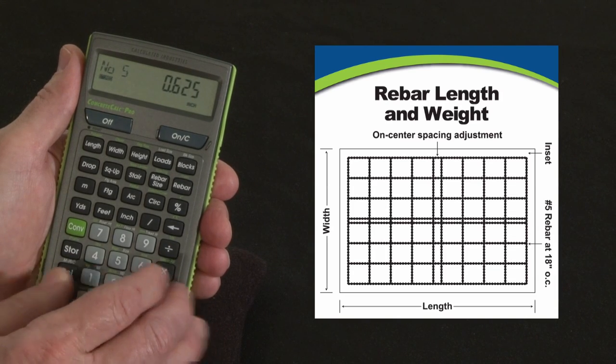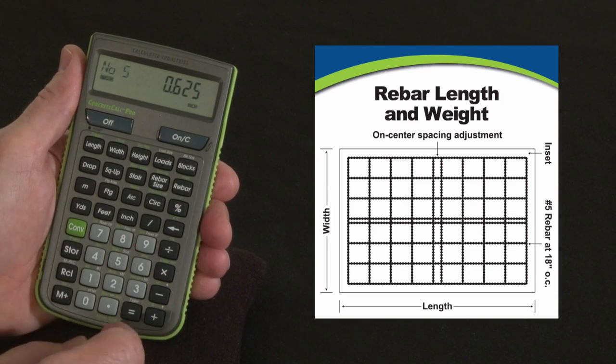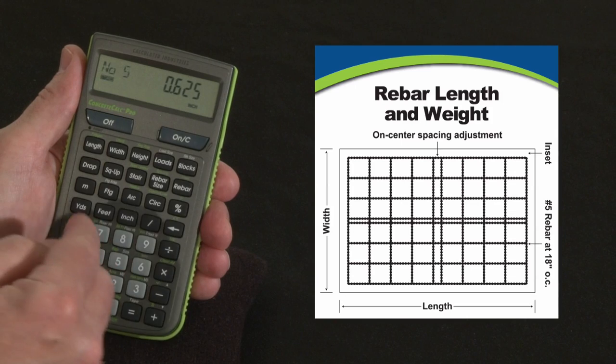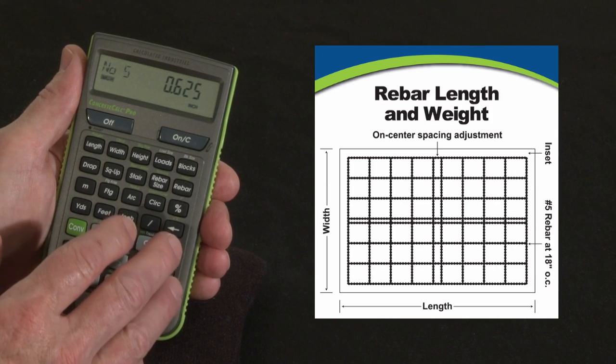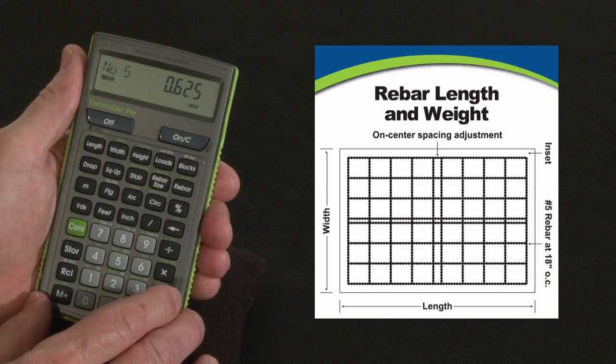And the on-center spacing is 18 inches on-center, both directions, and that we have an inset coming in from all edges of the forms of 3 inches. Those are default values. You can change any one of those, but for right now we're going to leave that the same.